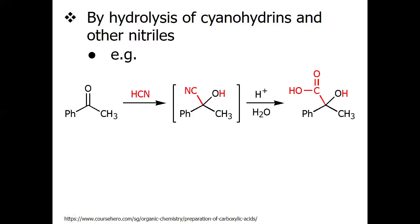Next, we can get carboxylic acid from ketones. When a ketone is treated with HCN or excess sodium cyanide, we may obtain the cyanohydrin, and after acidic workup we may obtain the carboxylic acid.